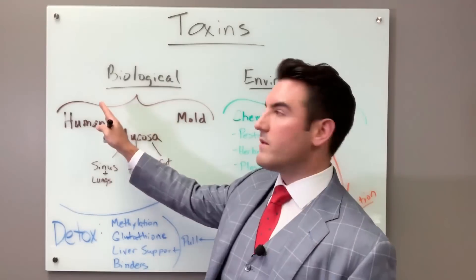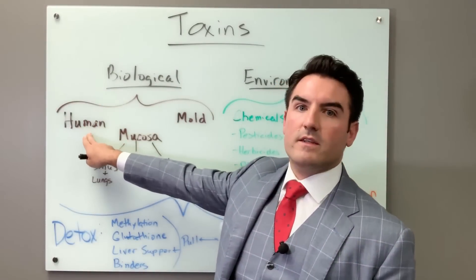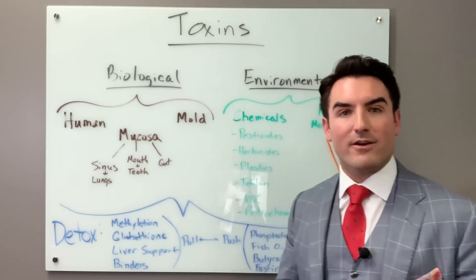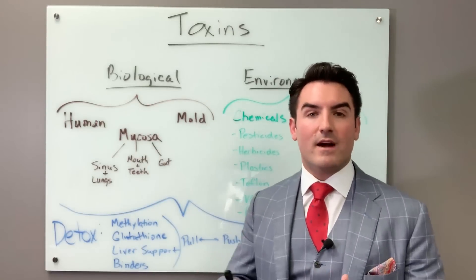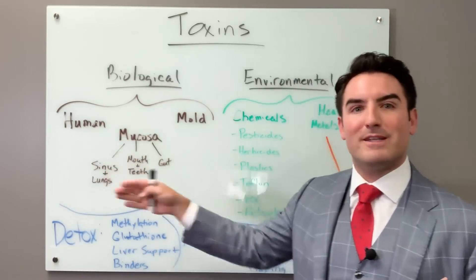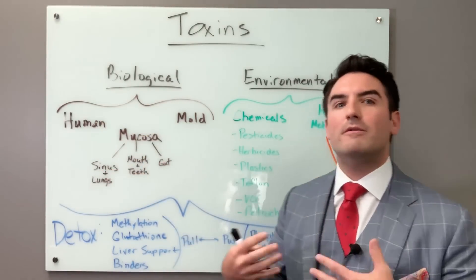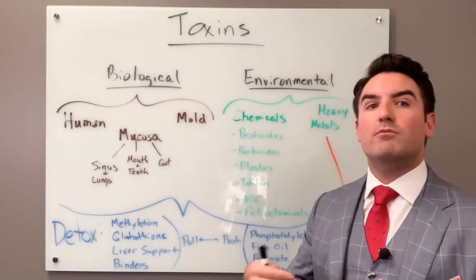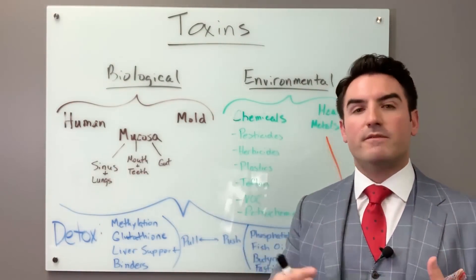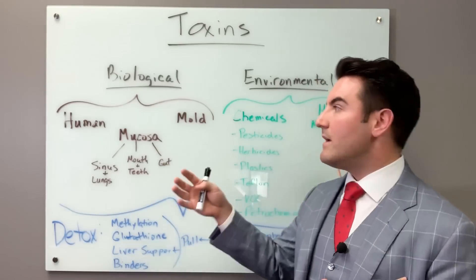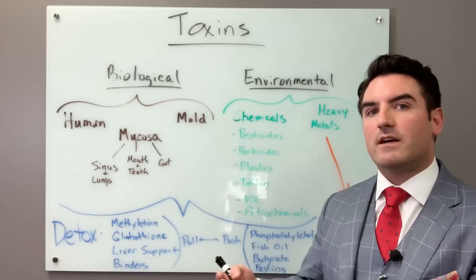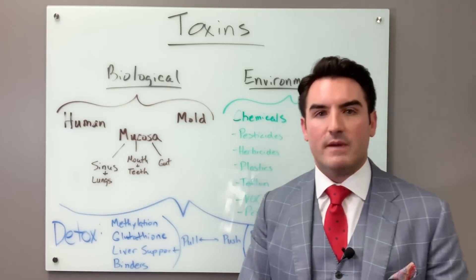The first toxin category is human — your own body makes toxins. Toxic relationships can be just as bad as any toxin, but more importantly, your own body creates toxins. You breathe out, you poop, you sweat — you get rid of toxins in multiple ways. Why did the body create those systems of detoxification? Because your own body makes toxins.